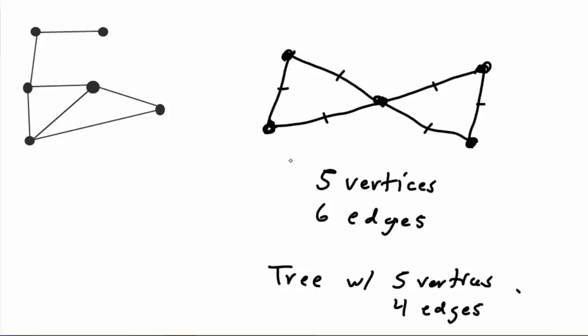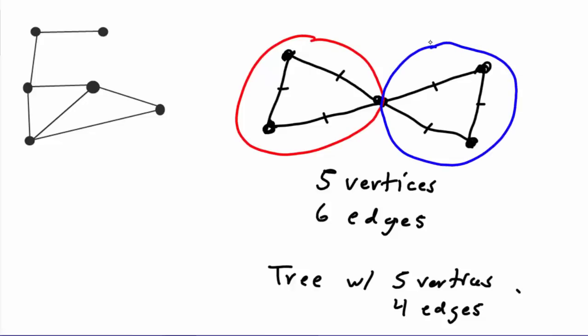We can't delete edges in just any way. We have to delete them such that the remaining edges form a tree — a connected graph on the five vertices with no circuits. So wherever we see a circuit, we try to remove an edge to destroy it. There are two fundamental circuits in this graph: one circled in red and another circled in blue. If we choose one edge to delete from the red circuit and another from the blue circuit, we will have deleted two edges and still have a spanning tree.